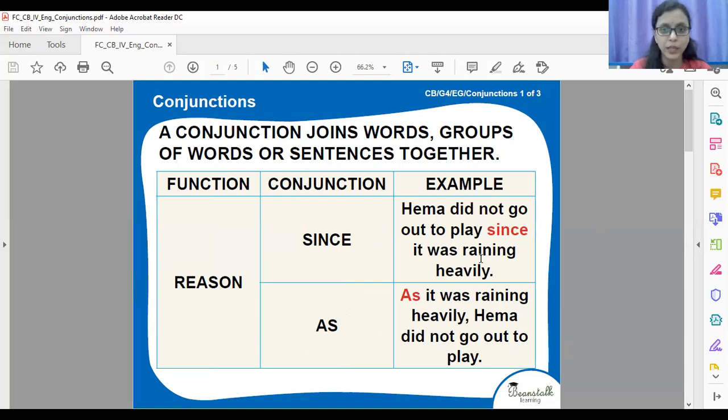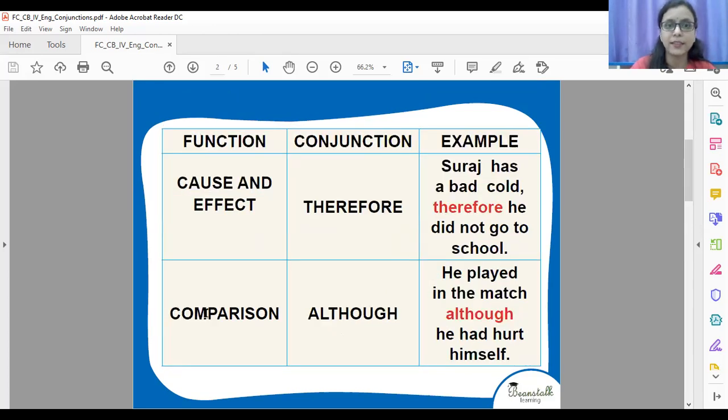Hema did not go out to play since it was raining. What is the reason? The rain is the reason. So since is used to show the reason. As it was raining heavily, Hema did not go out to play. So again, as is also used for giving the reason for Hema's not going out for playing. It is heavy rain. So since and as is used for showing reason.